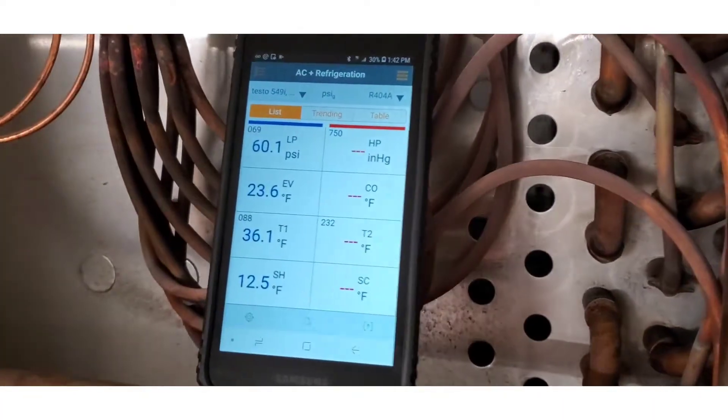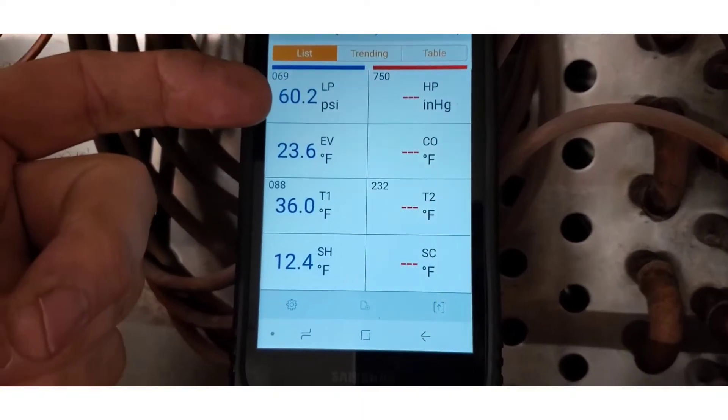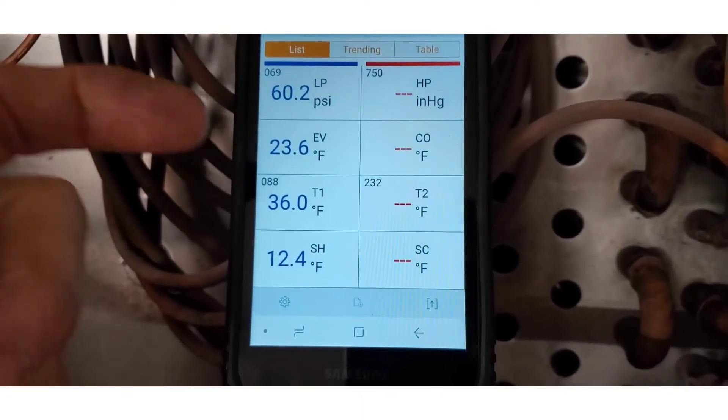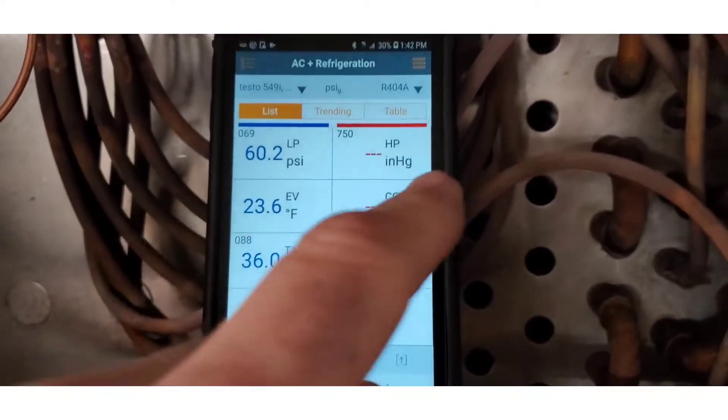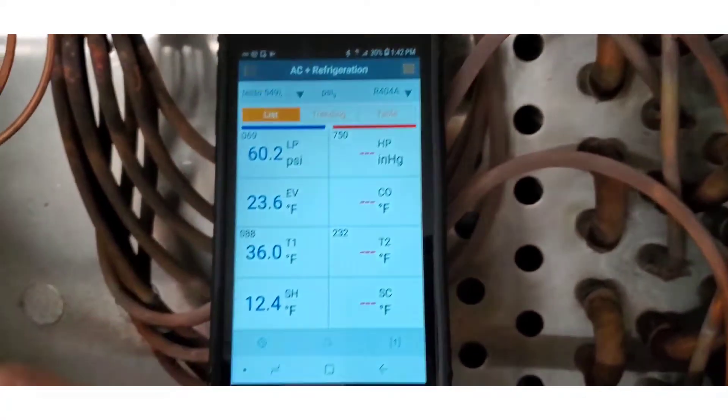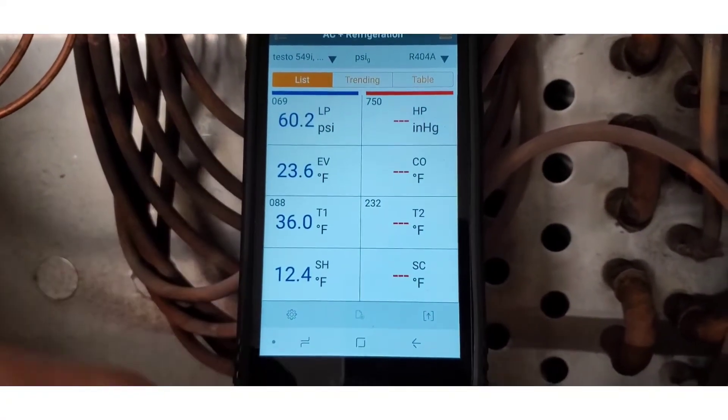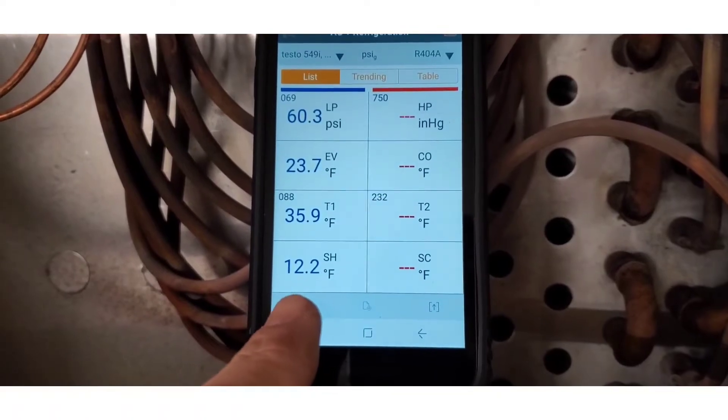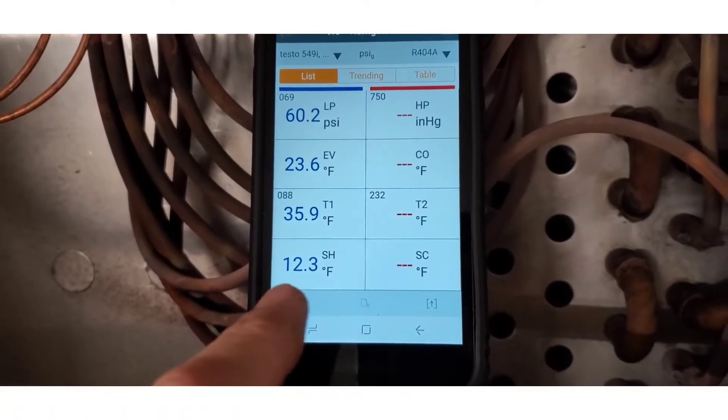Now, we got the smart probes app all fired up, and we can see our pressure. We can see our saturated temperature of the refrigerant, which is 404A. We can see our actual line temp, and we can see our superheat, 12.2, 12.3.